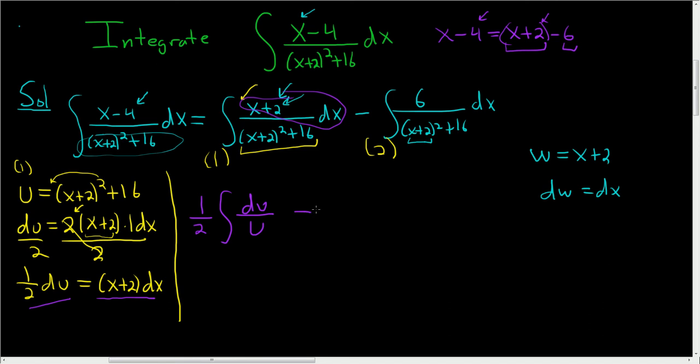So we can write it as follows. Minus the integral of 6/(w²+16), and if you remember, the arctan formula has an a², so we want to write 16 as 4², and then we have the dw. And if you forgot the arctan formula, it's ∫dx/(a²+x²) = (1/a)arctan(x/a) + C. So that's the formula we're going to use for this second integral.